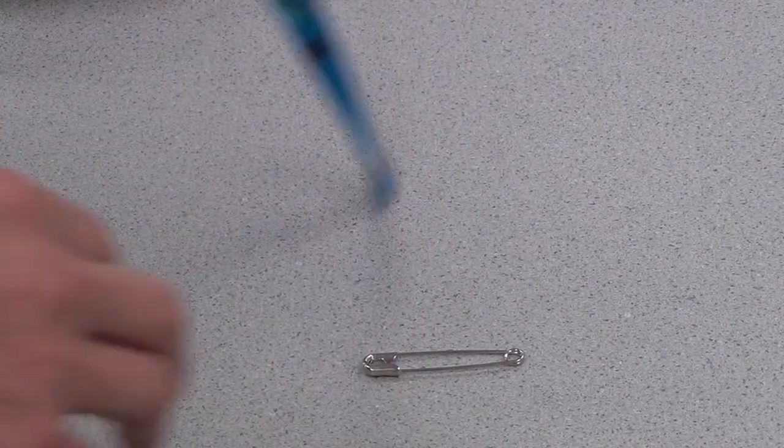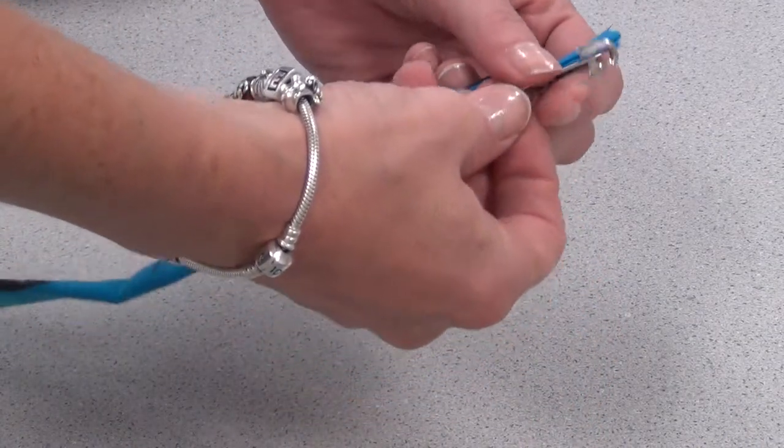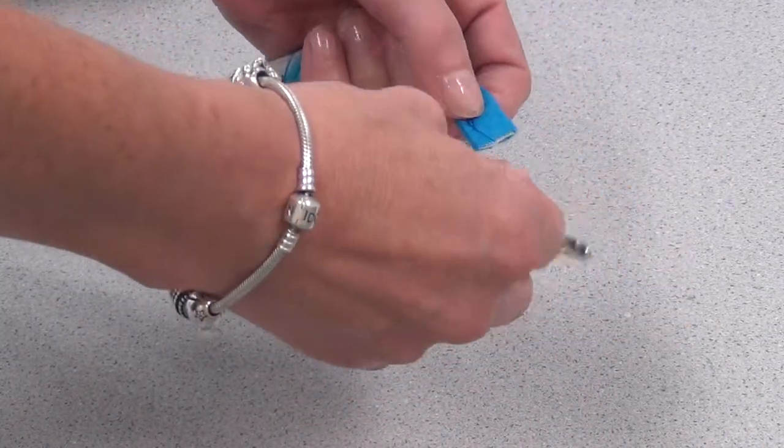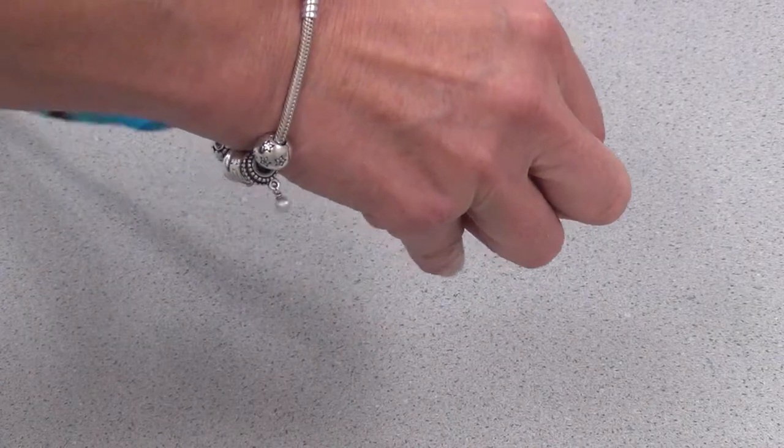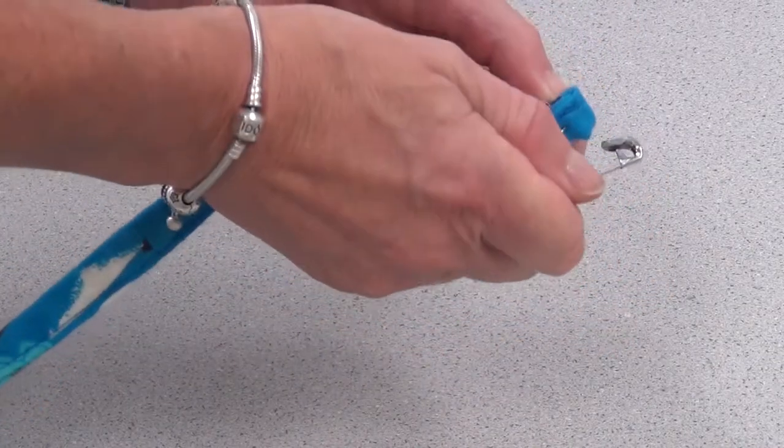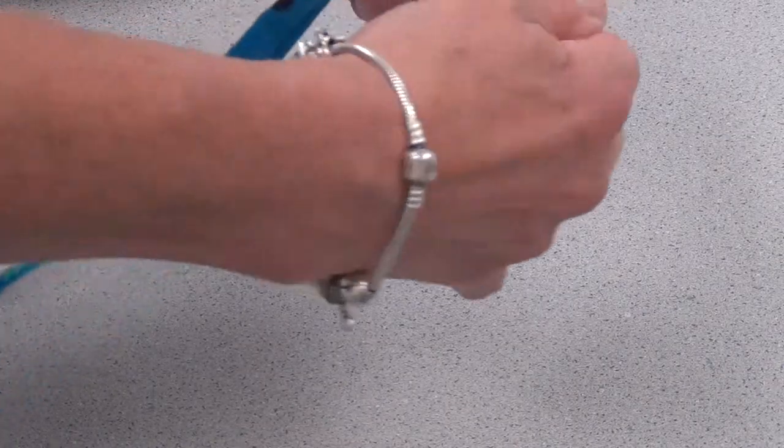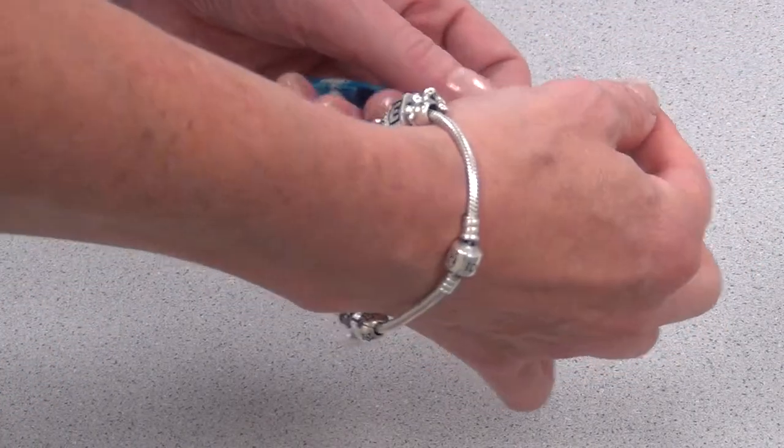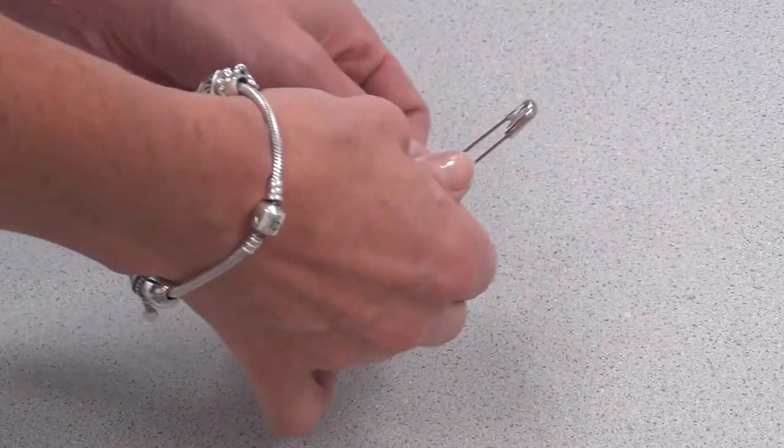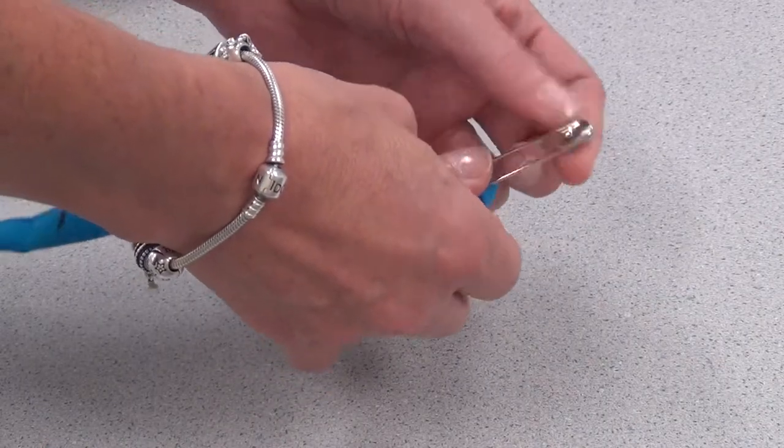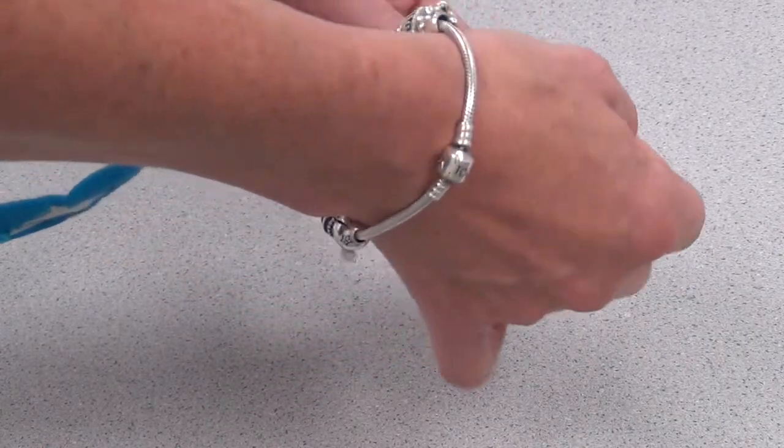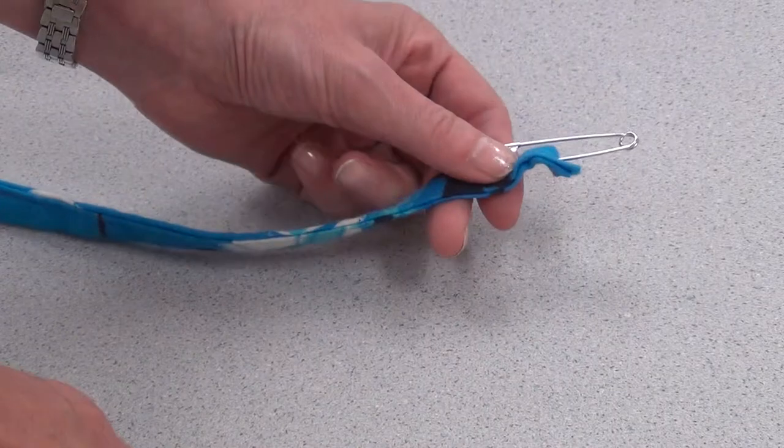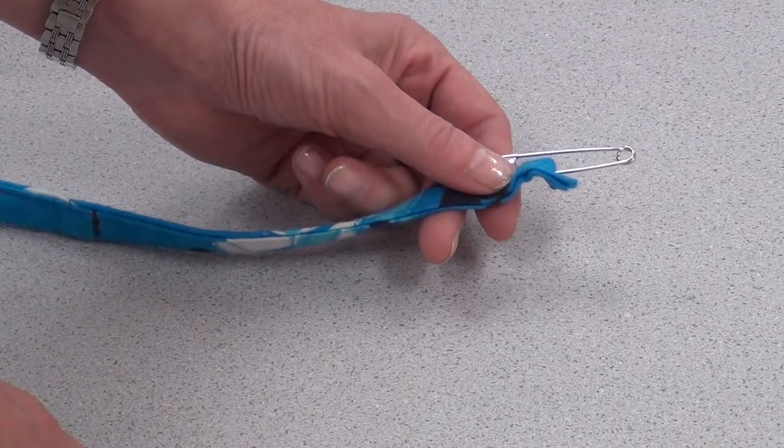We use safety pins often to connect two fabrics. For example, for this drawstring, if I want to pull it through, I need to attach it, put it in, put it out, grab at least a centimeter of fabric, close it and I always have the closed end leading. If you have the open end leading, it may open and stick in your fingers. So this is a safer way to use a safety pin and we often use it for pulling elastic as well.